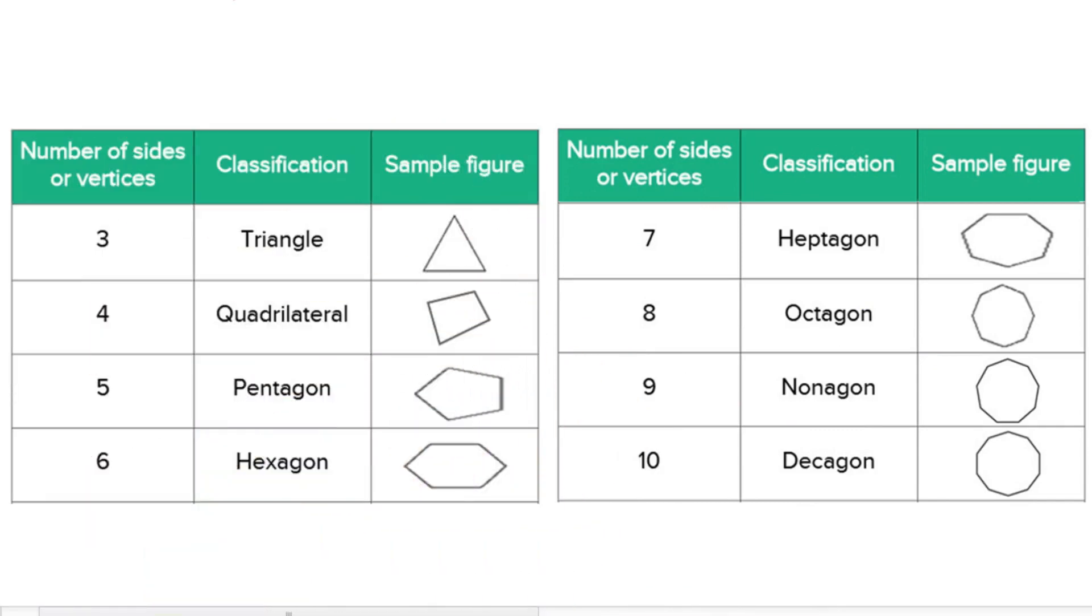Do you know this famous building in America? The interior of all these polygons can be broken down into triangles, which is a handy way to find the sum of their interior angles.